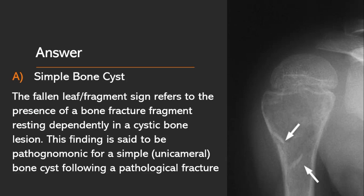The answer is option A, Simple bone cyst. The fallen leaf or fragment sign refers to the presence of a bone fracture fragment resting dependently in a cystic bone lesion. This finding is said to be pathognomonic for a simple unicameral bone cyst following a pathological fracture.